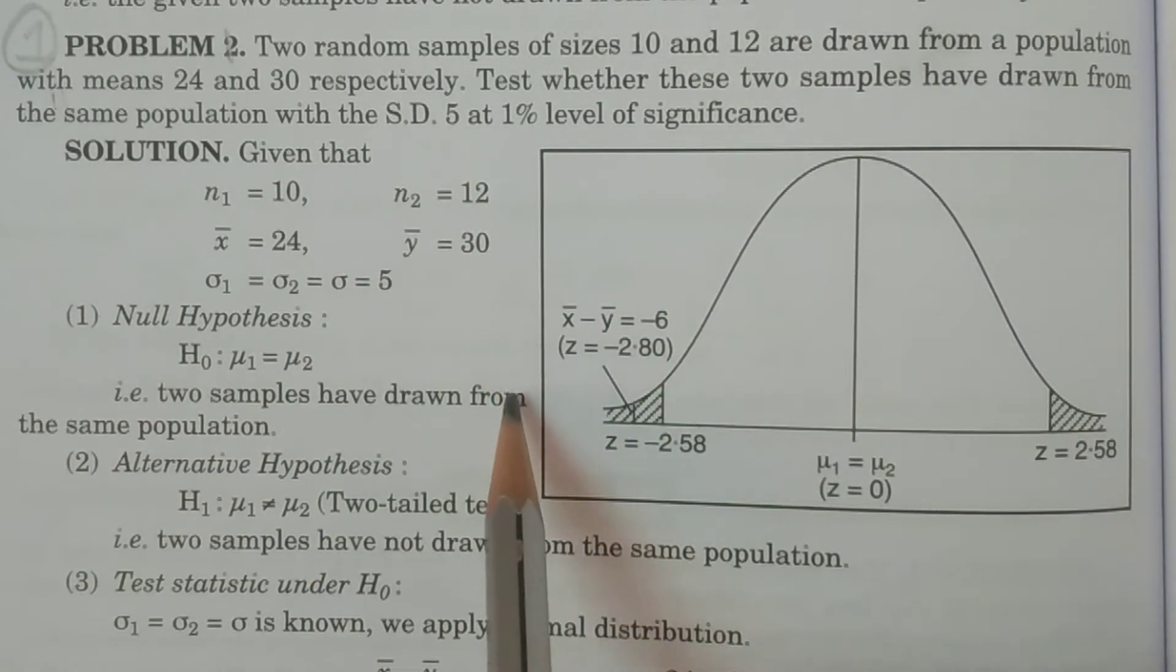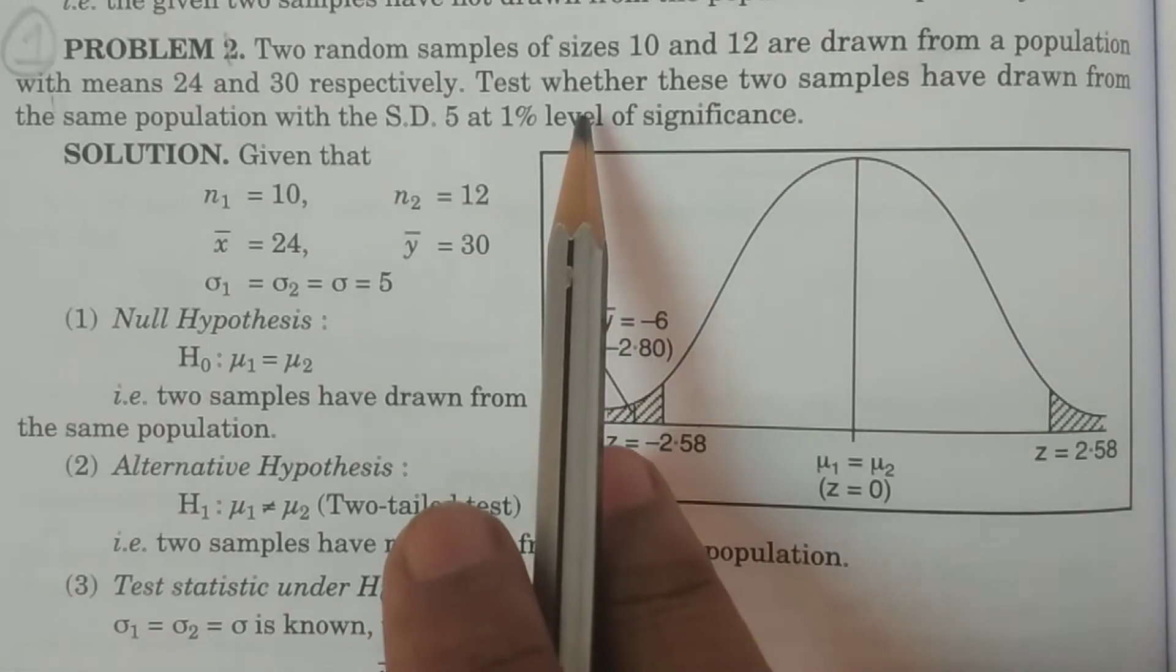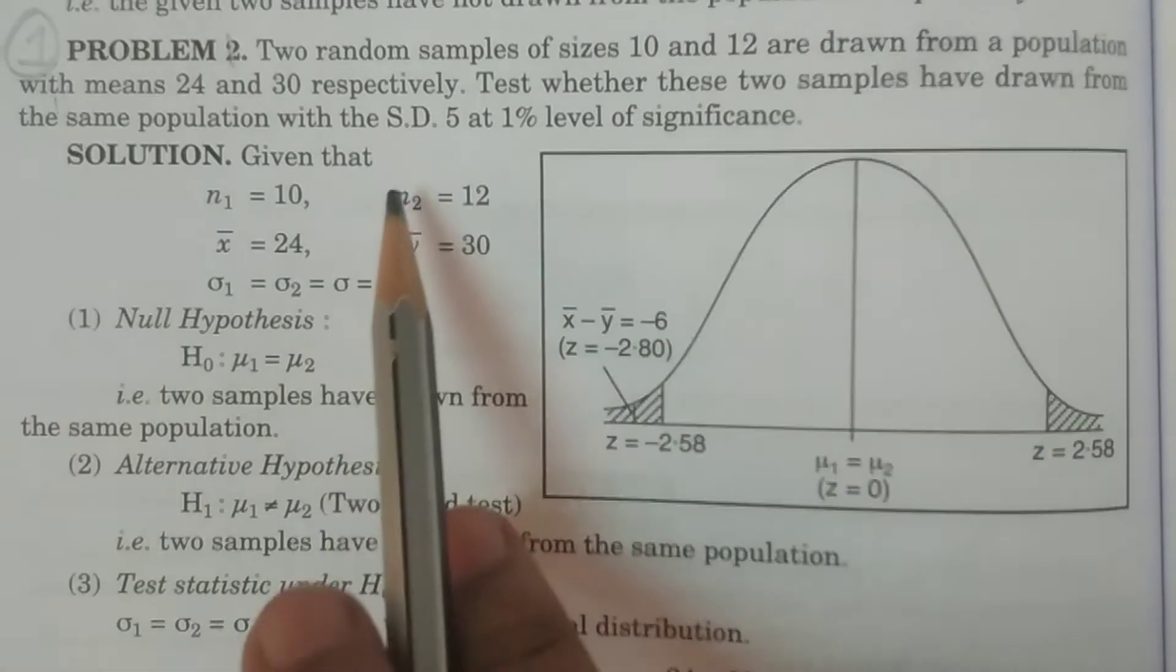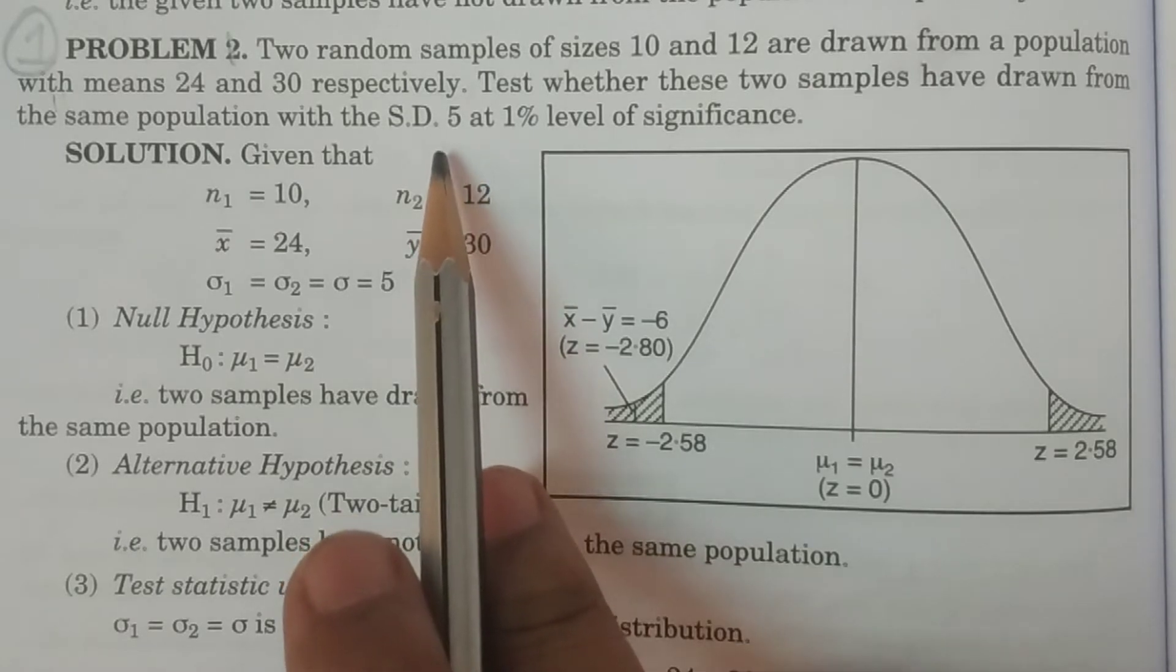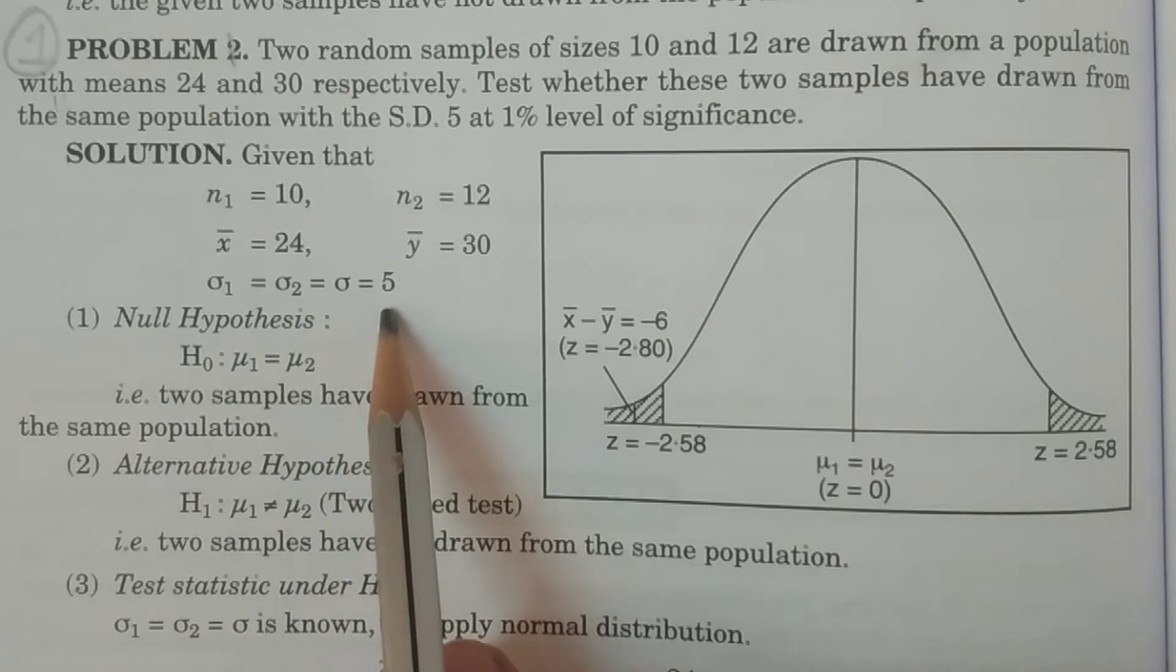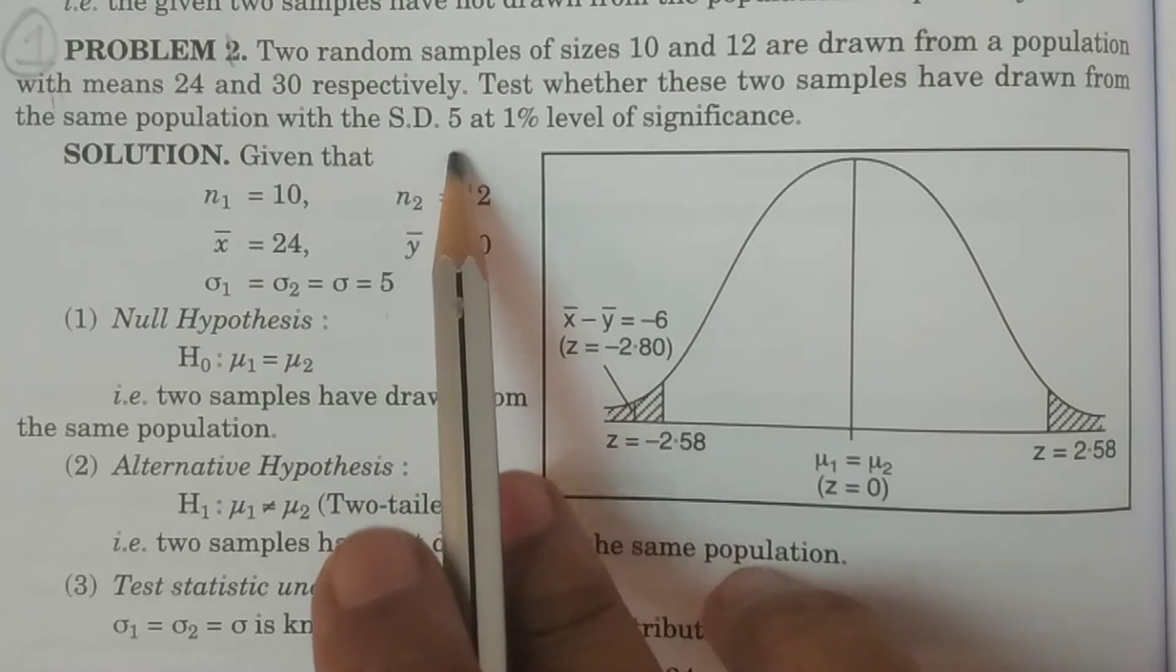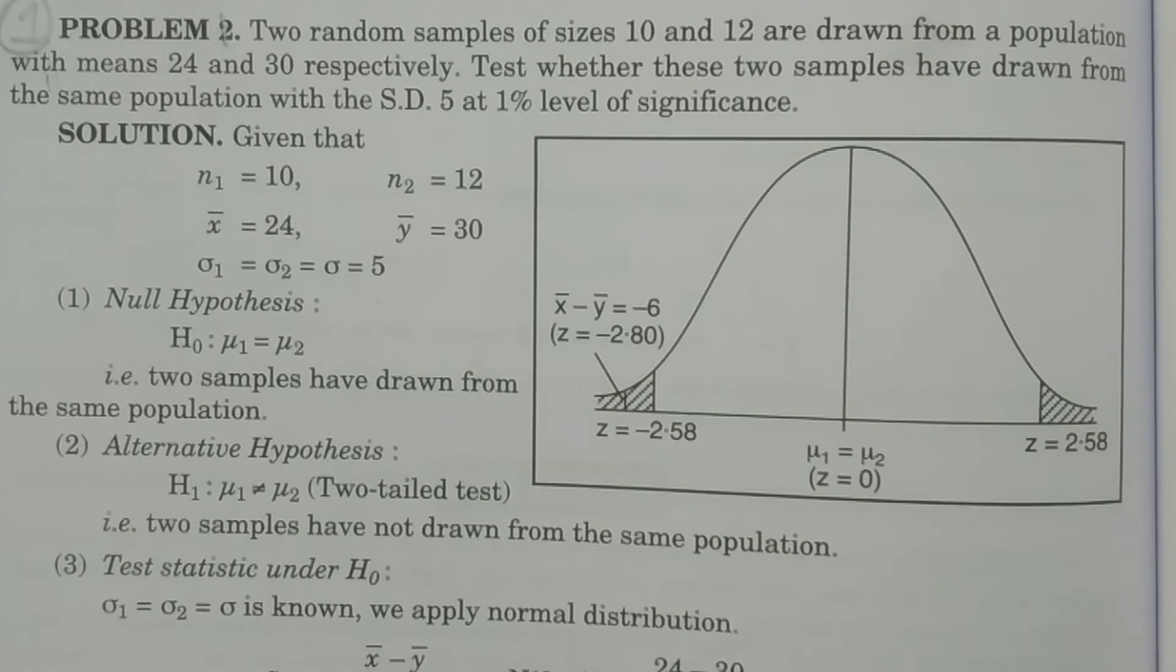That is, he is asking the question whether these two random samples have drawn from the same population with the standard deviation 5. That is, this is a population standard deviation: sigma 1 equals sigma 2 equals sigma equals 5. That is what the data is given, and tested at 1 percent level of significance.